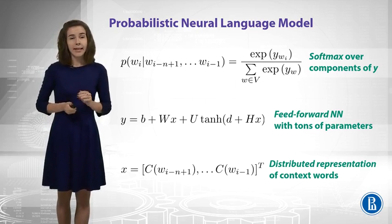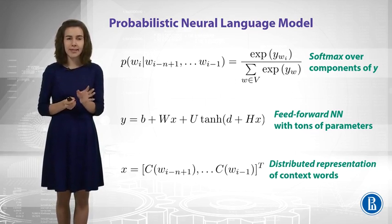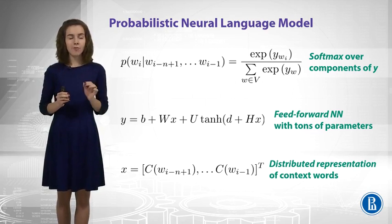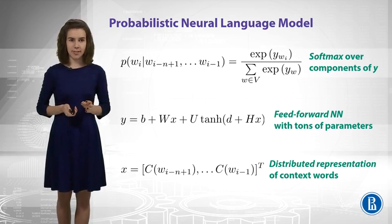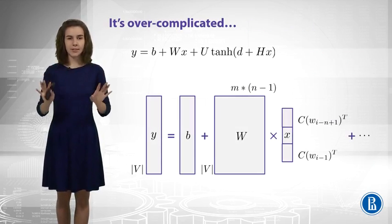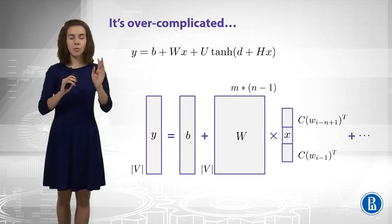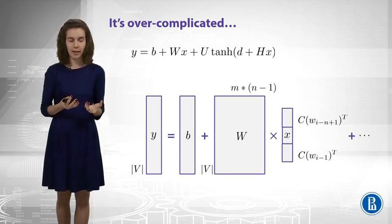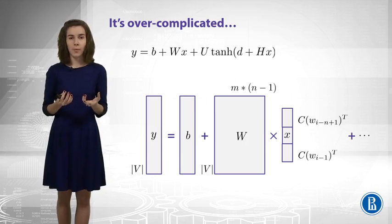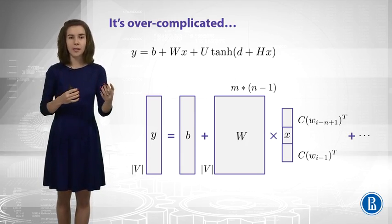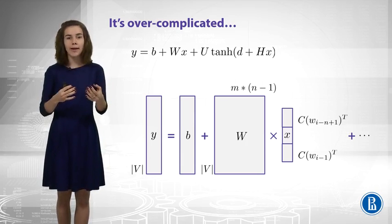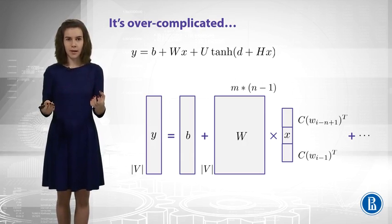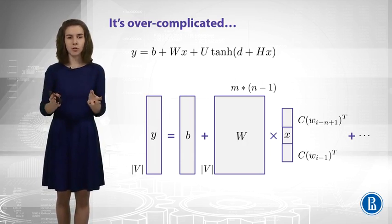Okay, great. Now, to check that we understand everything, it's always very good to try to understand the dimensions of all the matrices here. For example, what is the dimension of W matrix? Well, we can write it down like that, and we can see that what we want to get in the result of this formula has the dimension of the size of the vocabulary. Now, what is the dimension of X? Well, X is the concatenation of M-dimensional representations of N-1 words from the context. So, it is M multiplied by N-1. Here you go, you can see the dimension of W matrix.